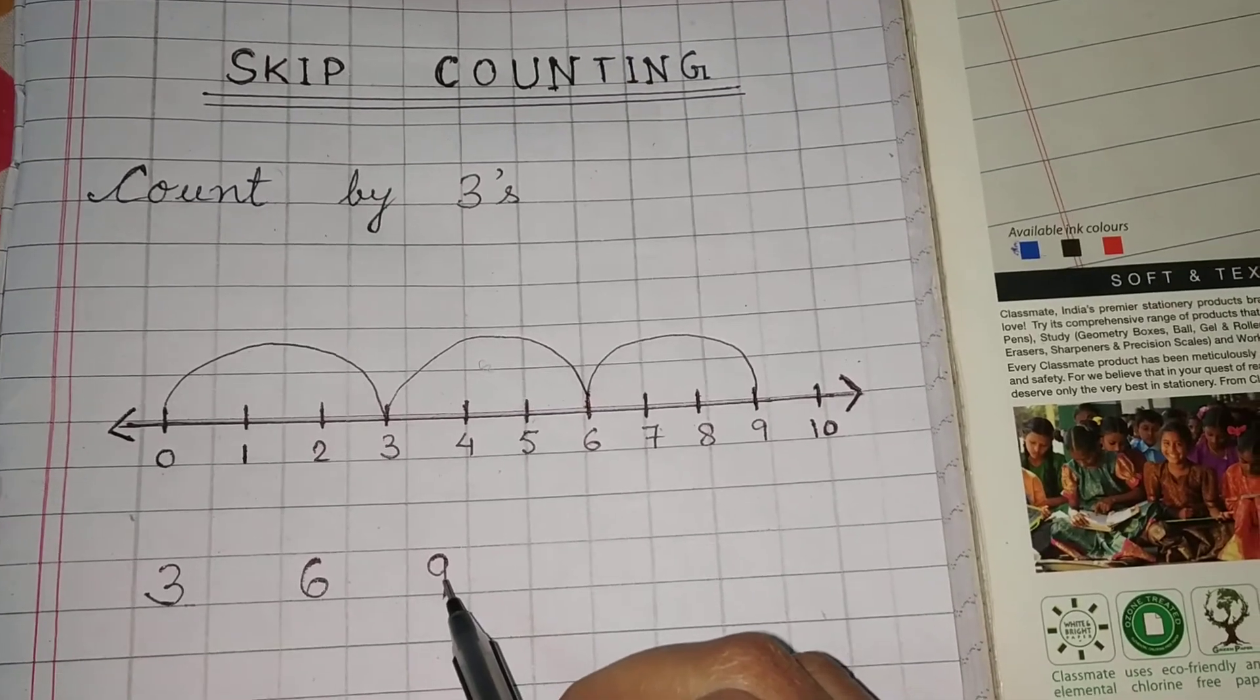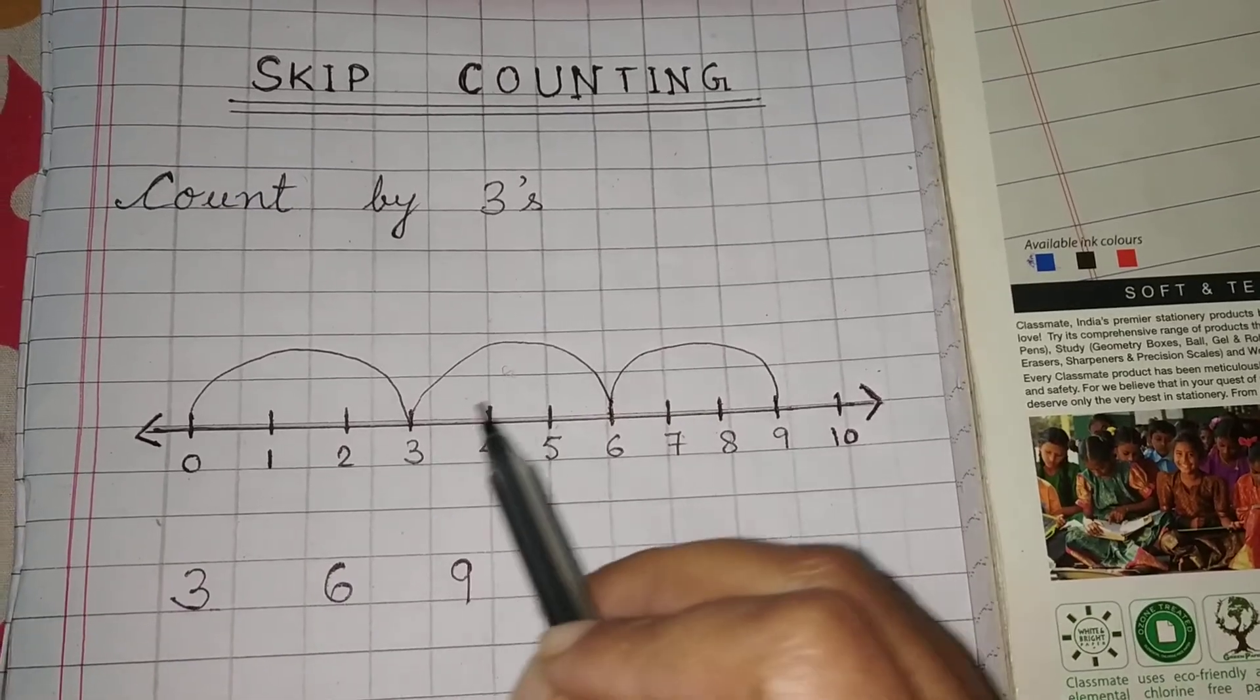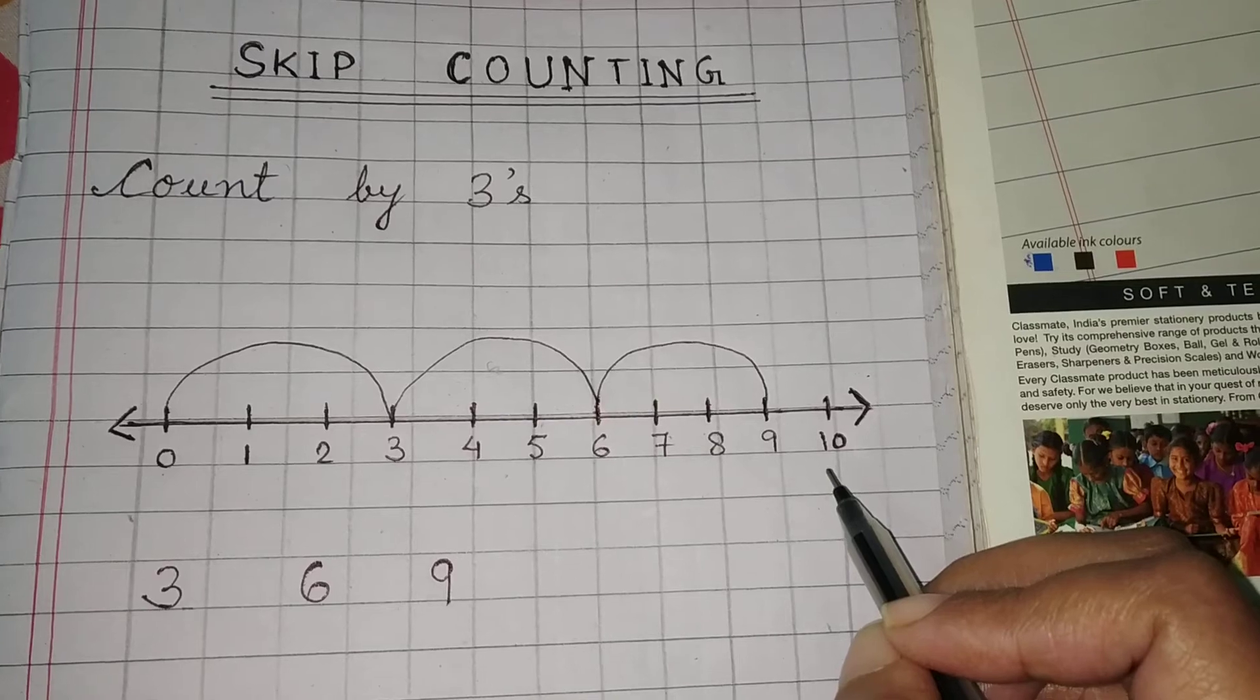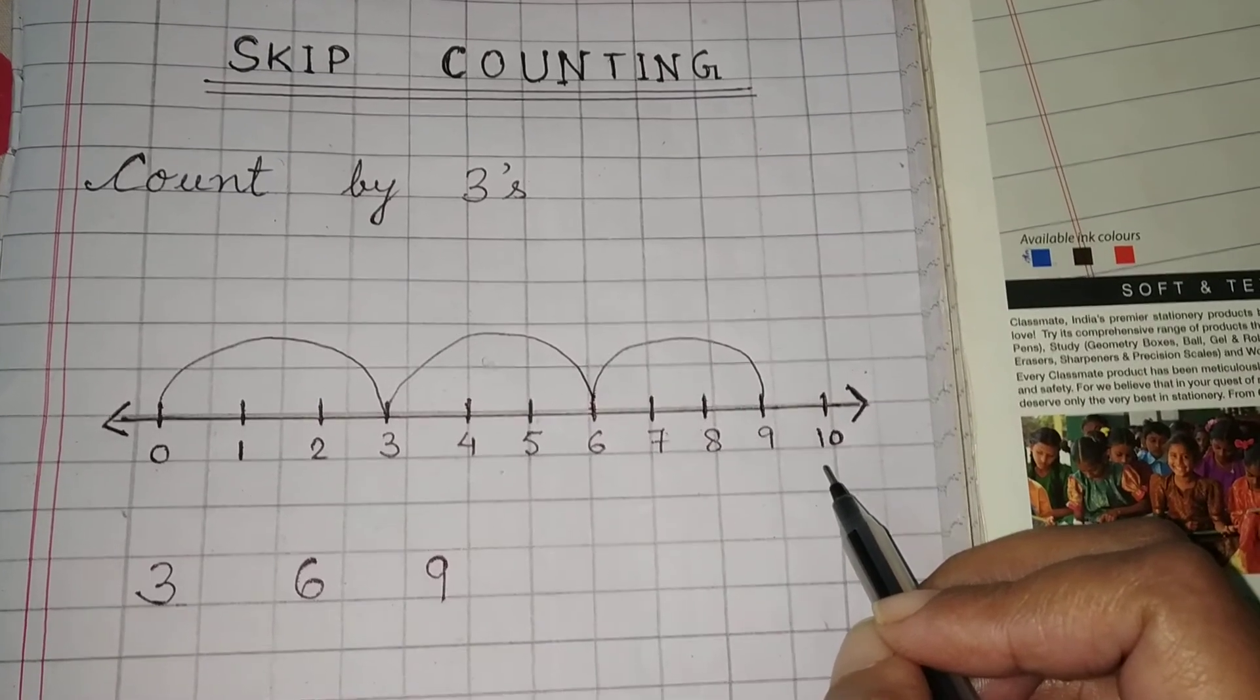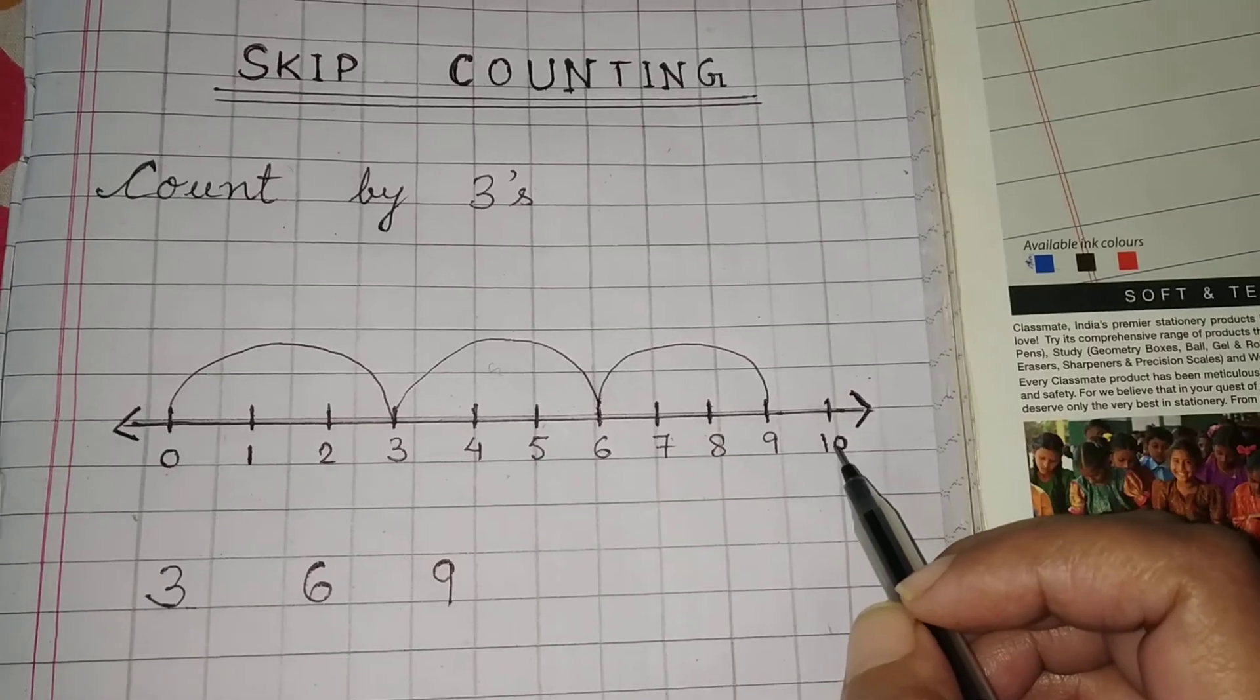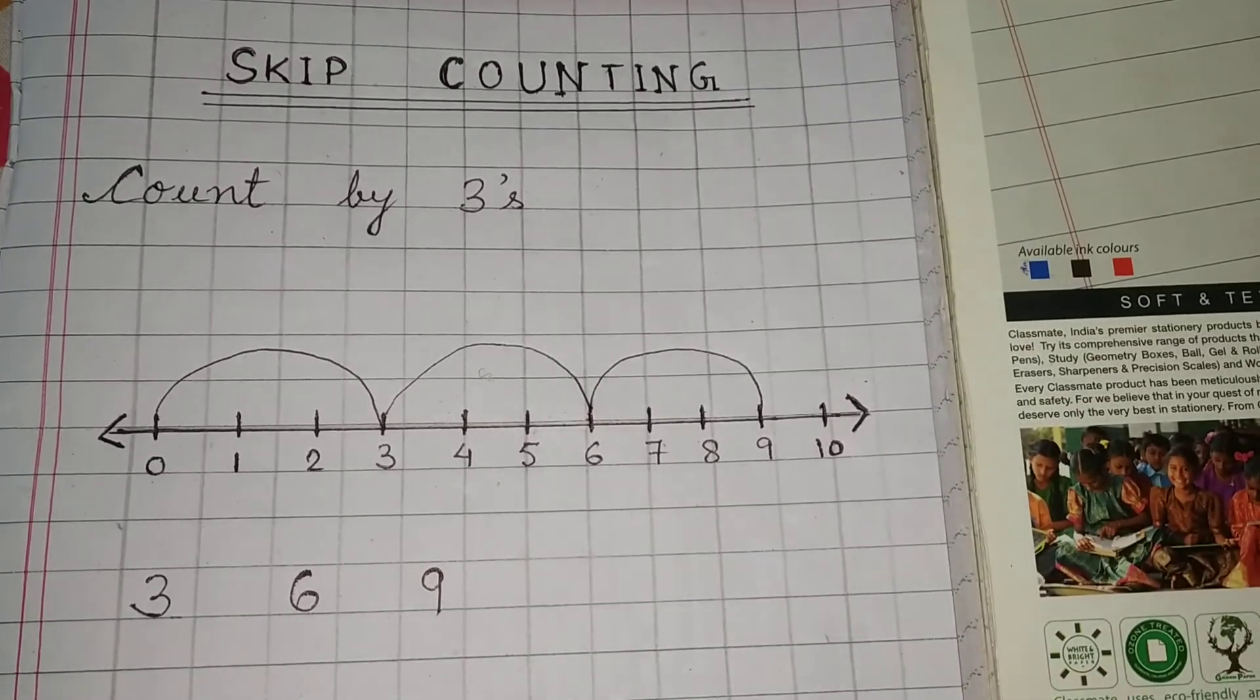The first number is three, the second number is six, and the third number is nine. So like this way you will be practicing skip counting by two and skip counting by three. Thank you.